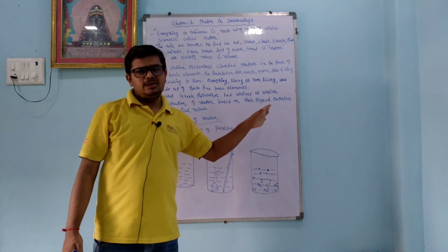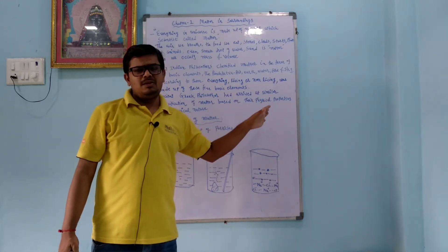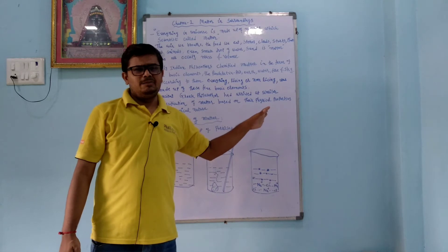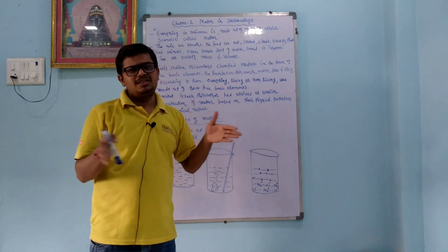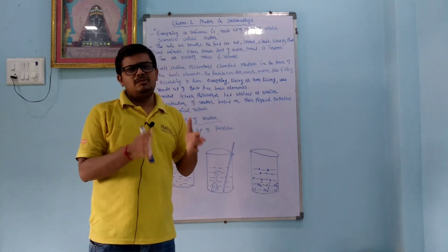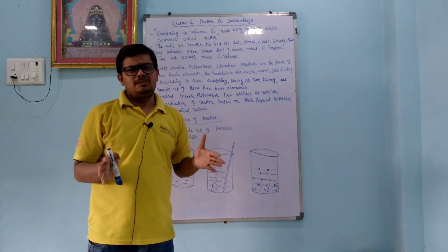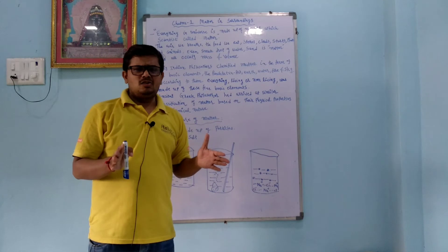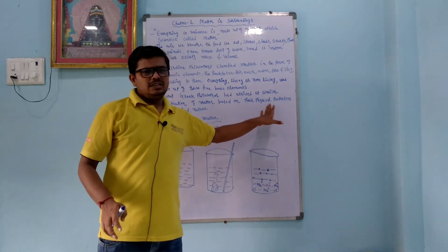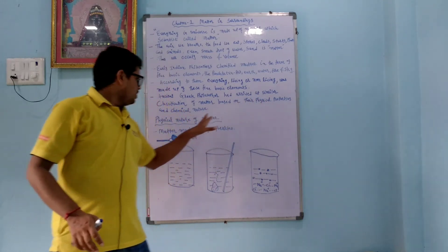The third state we learn is plasma. Plasma occurs at very high temperatures, where atoms are separated and subatomic parts are also separated. That state is called the plasma state.